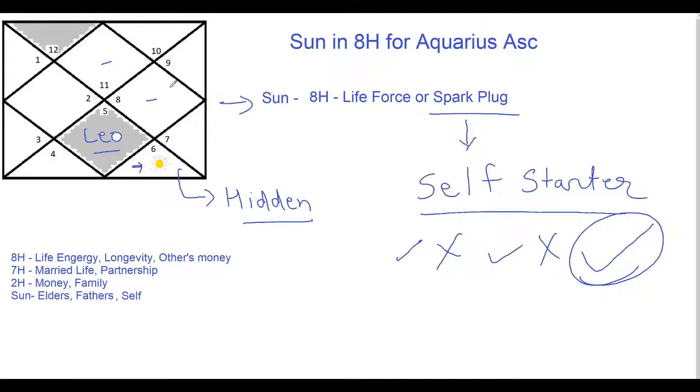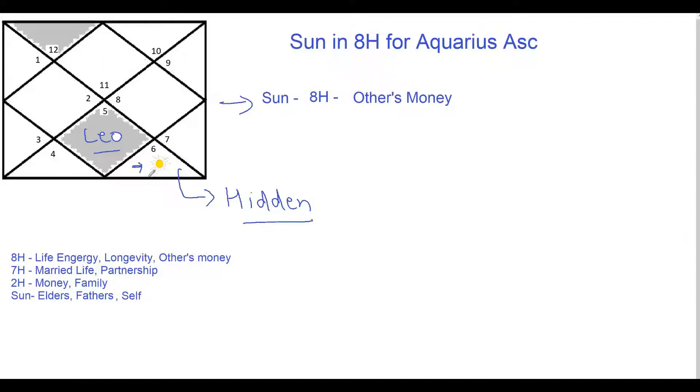So just this placement shows a self-starter nature, still though somewhat introvert but always thinking something going on in mind and always taking some or the other initiative. And generally they get success in life after second third attempt. Now again if there are many positive influences on the Sun this can change - they can simultaneously do two three enterprises and get success in all of them. But just this placement of Sun indicates towards this.